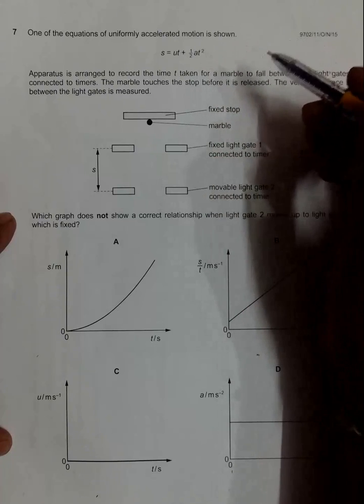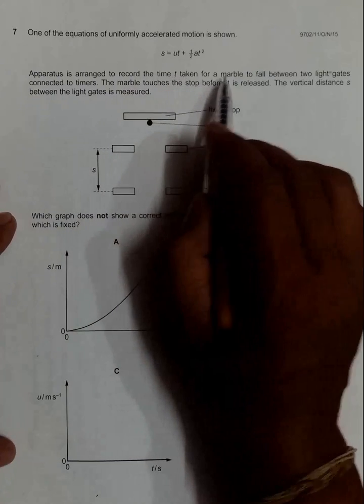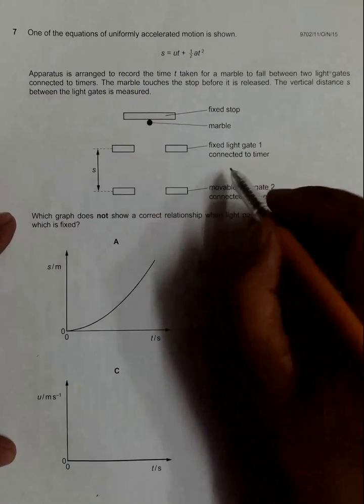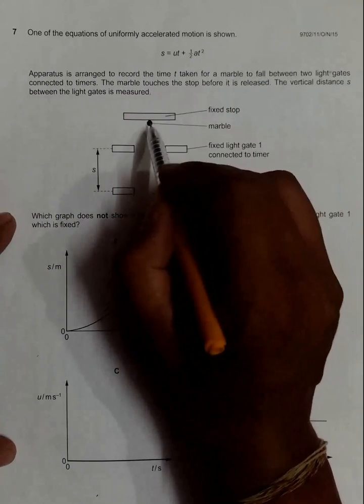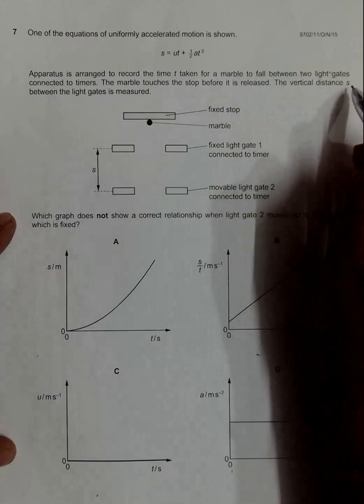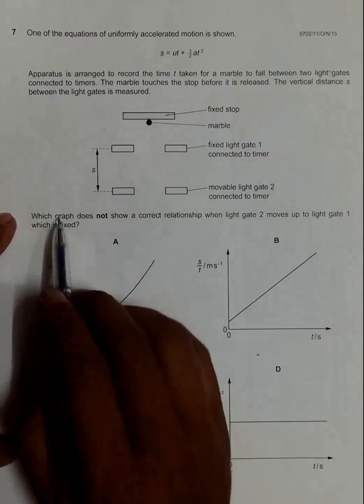Apparatus is arranged to record the time T taken for a marble to fall between two light gates connected to timers. The marble touches the stop before it is released from here. The vertical distance s between the light gates is measured.